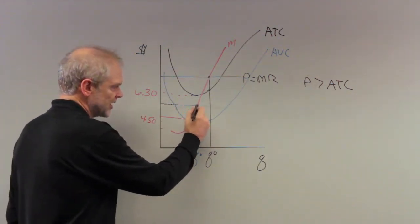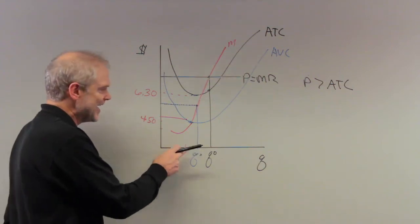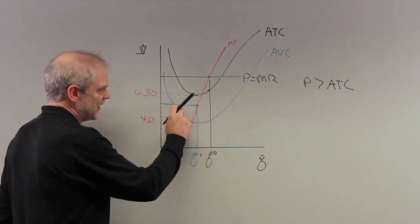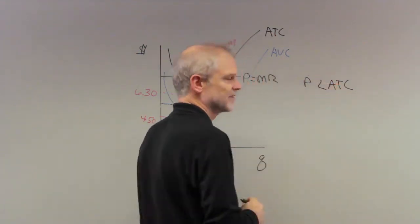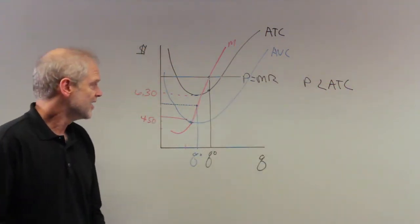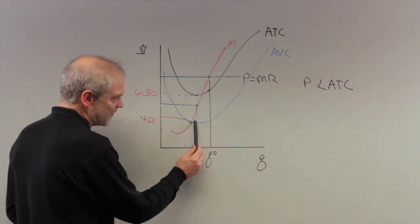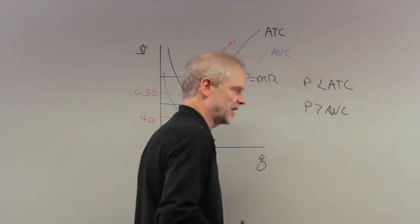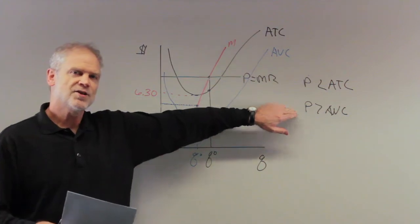At $5, the firm sets price equal to marginal cost and produces Q star — the best it can do. At Q star, price is below average total cost, so the firm is losing money. But the question is whether the loss is so severe that price falls below average variable cost. The answer is no — price is greater than average variable cost here. The firm is losing money but can still pay its suppliers and labor, so in the short run this firm should stay in business.